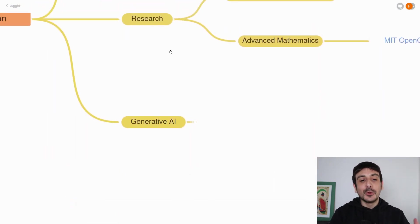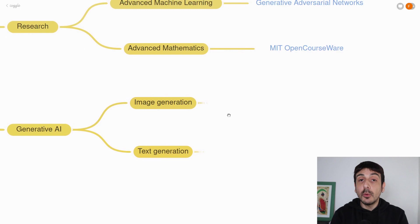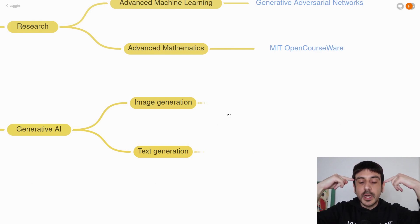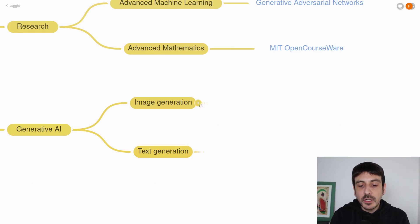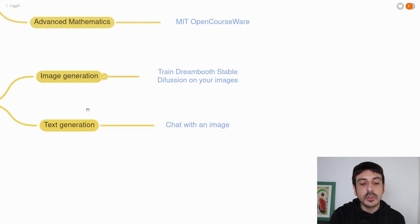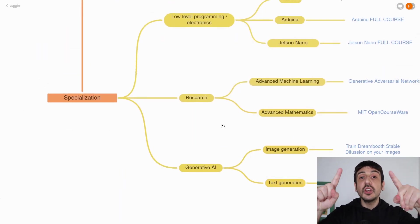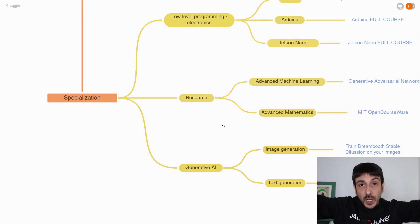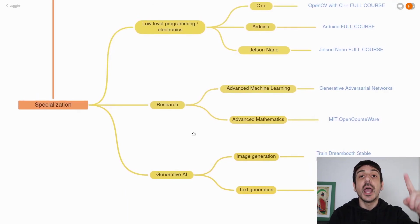Now let's take it to the other way in which you can specialize, which is generative AI. This basically involves image generation and also text generation. This is already a very important field in computer vision, and my thoughts are that in the next few years it's going to be bigger and bigger. These are some specific tutorials from my own YouTube channel you can take in order to learn how to work with image generation and text generation in a computer vision project. These are some of the ways in which you can specialize — definitely not all the ways, but I think these are some of the most important paths you could take as a computer vision engineer.